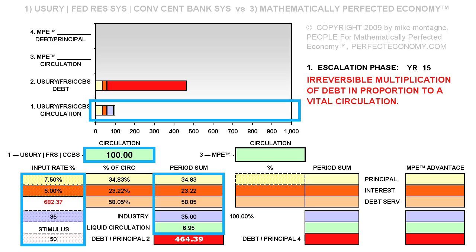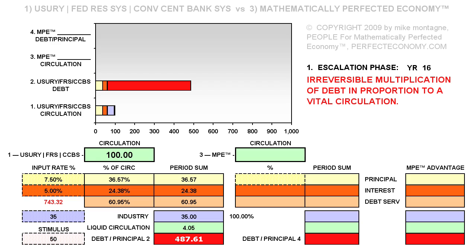And so of course we will now see the multiplying sum of debt more gradually encroach upon industry. Moving on to year 16, noting that indeed while we still suffer encroachment evident in the disappearance of liquid circulation, the rate of encroachment has been moderated, the effect of which of course is to maintain a maximal volume of dispossession.